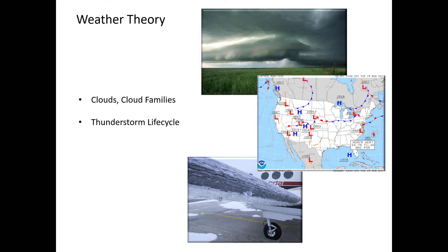Let's move on with our weather theory series. Up to this point we've talked about the big picture - why weather patterns exist around Earth, how they flow, what the air masses are doing as far as low and high pressure, and we spent a good deal of time in the last video talking about atmospheric stability and how it relates to weather characteristics within different types of air masses. Now we're going to get even more granular.